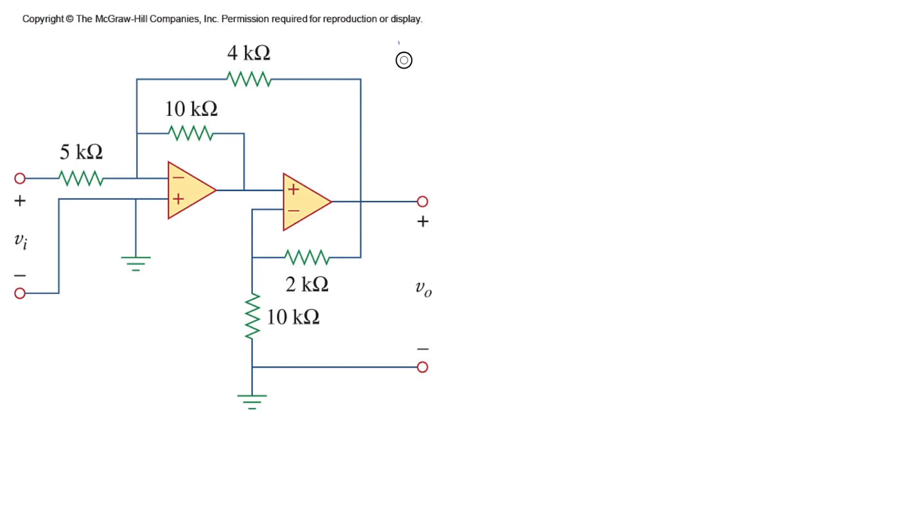In this video, I'm going to explain how to get Vout over Vin. In other words, what is this Vout over Vin? It's called gain. So what is the gain of our circuit?